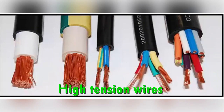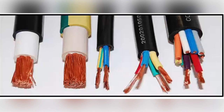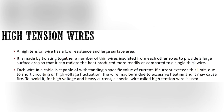For high voltage and high current, a special high tension wire is used. A high tension wire has low resistance and a large surface area. It is made by twisting together a number of thin wires insulated from each other to provide a large surface area. Due to this large surface area, it can radiate heat more effectively compared to a single thick wire.